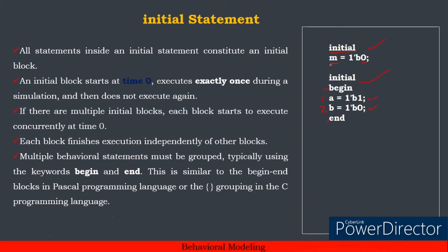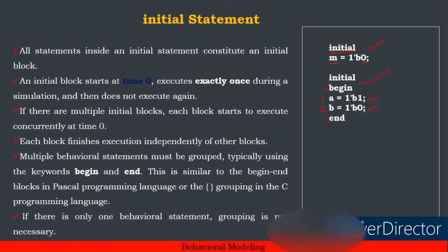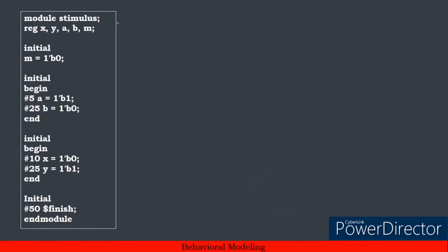I will take the stimulus — module stimulus. There is a register for x, y, a, b, m. There are four initial blocks. First initial block: m is equal to 1'b0. Second initial block: a and b. Third initial block: x and y. Fourth initial block: simulation finish — $finish task.